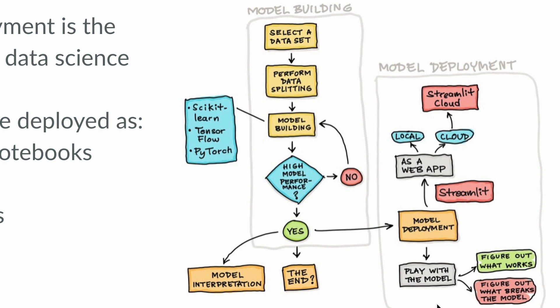This could be upper management or business analysts who could provide insights to improve the model further. Model deployment as a web application requires a steep learning curve — it requires time learning a web framework, which might involve lengthy coding to create a minimum viable product. However, Streamlit allows you to create such MVPs with minimal coding, which you'll be learning in this Streamlit 101 series.